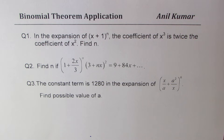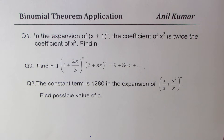Question 1: In the expansion of (x + 1) to the power of n, the coefficient of x³ is twice the coefficient of x². Find n. Question 2: Find n if (1 + 2x/3) to the power of n times (3 + nx)² equals 9 + 84x + so on. Question 3: The constant term is 1280 in the expansion of (x/a + a²/x) to the power of 6. Find the possible value of a.